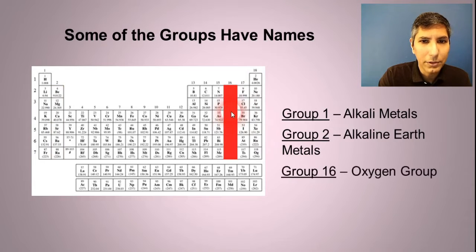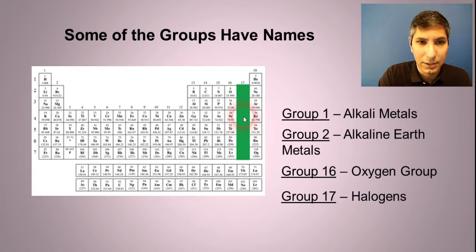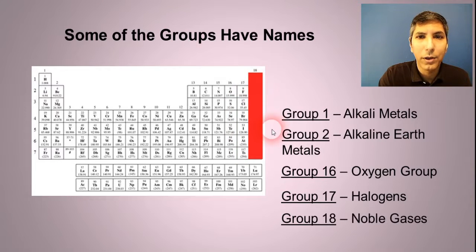Group 16 over here, these are called the oxygen groups. Sometimes they're called the chalcogens as well, but the more common name is oxygen group. Group 17, those are called the halogens. And group 18 are called the noble gases. Not every group has a name that you have to learn, but these are the main ones that you need to be aware of.